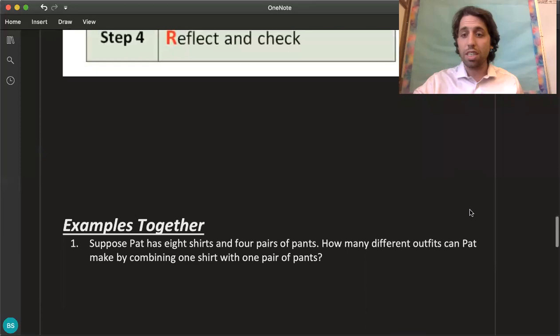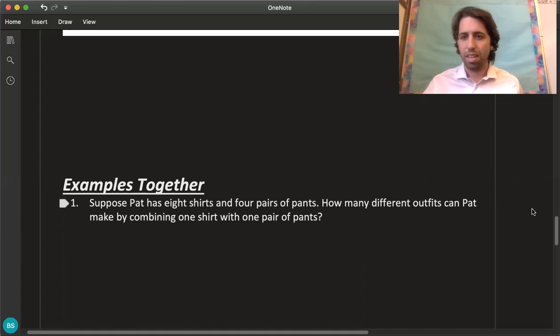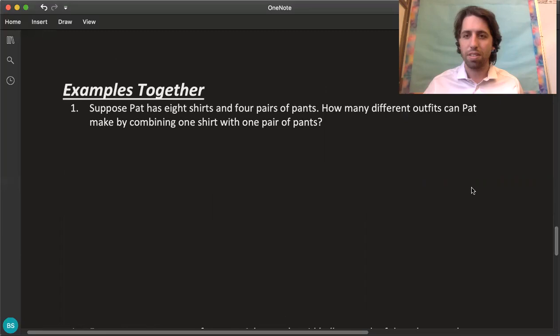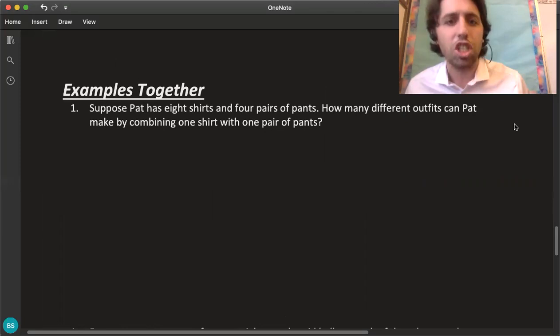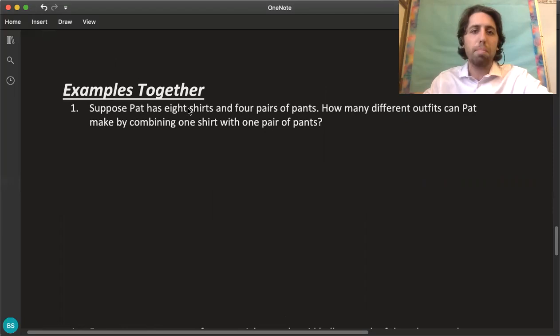I need to plug in real quick and we're going to try two together and I'm going to have you do two on your own afterwards. So I have a document pen that I'm hoping is going to work for us so we'll see about that. So the first one says suppose Pat has eight shirts and four pairs of pants, how many different outfits can Pat make by combining one shirt and one pair of pants?